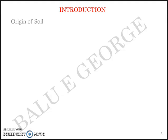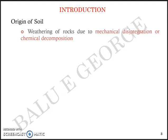Now coming to the introduction — the origin of soil. You may have read about the origin of soils in your plus-two physics or science in general. Obviously it's due to the weathering of rocks, which can be due to mechanical disintegration or chemical decomposition. The weathering of rock by the agents of weathering results in soil formation.